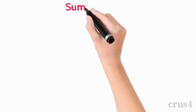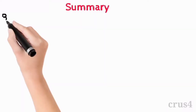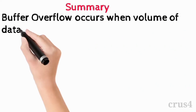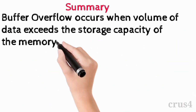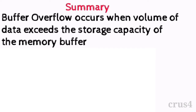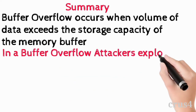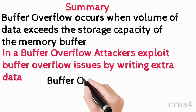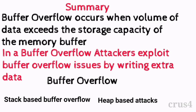At the end, let's take a short look at the summary of this lecture. We learnt about Buffer Overflow attacks, where Buffer Overflow occurs when the volume of data exceeds the storage capacity of the memory buffer. In a Buffer Overflow attack, attackers exploit Buffer Overflow issues by writing extra data. Buffer Overflows are of two types: stack-based buffer overflows and heap-based attacks, with stack-based being more common. We can prevent Buffer Overflow by using compiler tools like Stack Shield, safe functions, and code auditing.